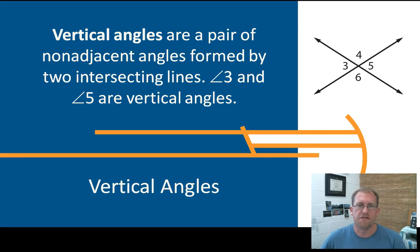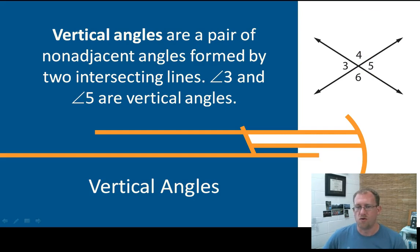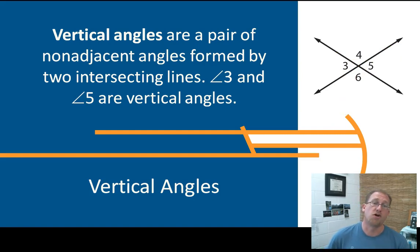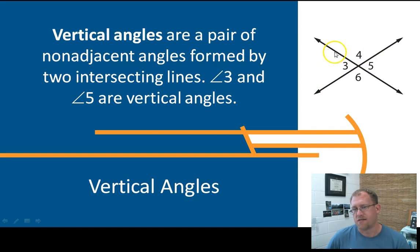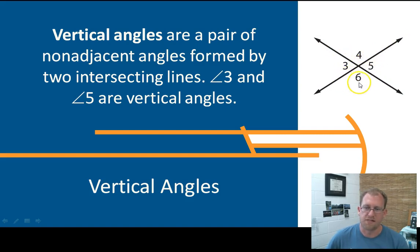Another common term you're going to use a lot in proofs is a vertical pair of angles — these are angles that are across an intersection from each other. A pair of non-adjacent angles formed by two intersecting lines. So four and six, or three and five — either of these are called vertical angle pairs. Vertical angle pairs are always congruent to each other. Angle four and angle six have to be the same, and angle three and angle five are going to have to be the same, because if these are straight lines that intersect, they form the same degree of measure on opposite sides of the intersection.